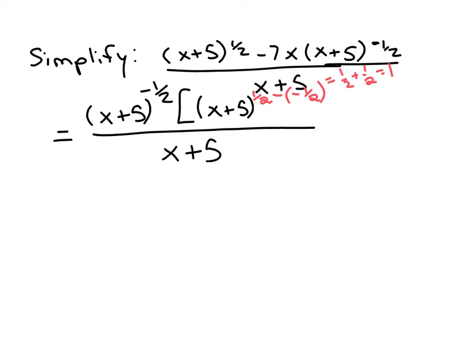So on the next step, x plus 5 to the negative one-half, we're going to have just x plus 5 to the first. So we'll just write x plus 5 for that first part of the expression. Now, for the second part, let's see, minus 7x, so that's just going to stay.